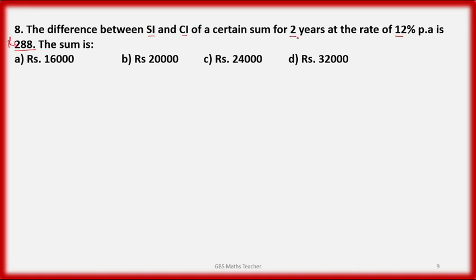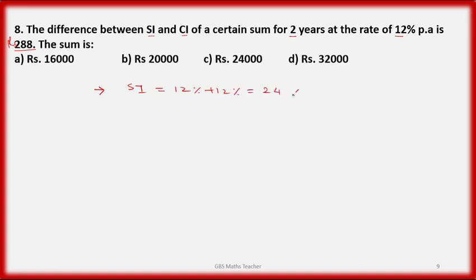For 2 years at 12% per annum: simple interest earns 12% + 12% = 24% over 2 years. Compound interest for the same period earns 12% + 12% + (12% × 12%)/100, giving 24 + 1.44 = 25.44 percent.